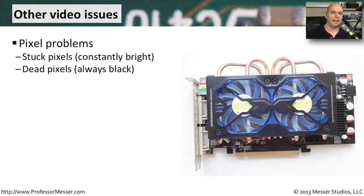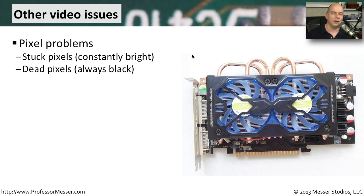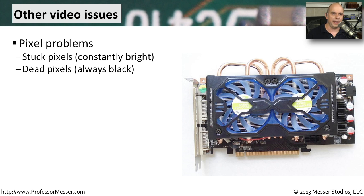LCD displays contain thousands — in some cases millions — of pixels, and occasionally certain pixels aren't working the way they should. You may run into a stuck pixel, where one pixel is always bright — always white, red, or green — and it never changes. You might also find pixels that never light up and stay black all the time. Contact the manufacturer to see if there is a warranty replacement available for a certain number of stuck or dead pixels. You may also be able to use software to help restart those pixels, but usually once they're stuck or dead, it's very difficult to get them working again.